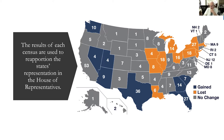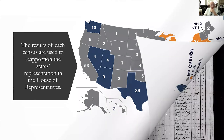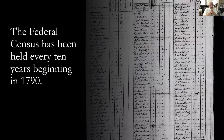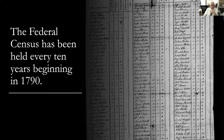We just passed a census in 2020, and we'll have another in 2030 — it's an ongoing process. Here is a screenshot from one of the digitized copies of the original 1790 census. The census has been held every 10 years since that early 1790 census.